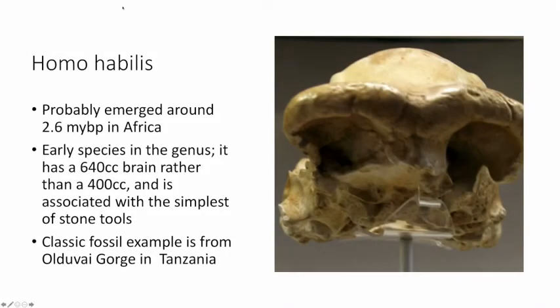Going beyond Homo erectus, the next species further back in time and probably ancestral to Homo erectus is Homo habilis, dating back to 2.6 million years before present. It's a very early species in the genus, with a small cranial capacity of about 640 cubic centimeters — more equivalent in terms of brain capacity to a chimpanzee's roughly 400 cc. We find the very simplest stone tools associated with it. A classic example is from Olduvai Gorge in Tanzania.